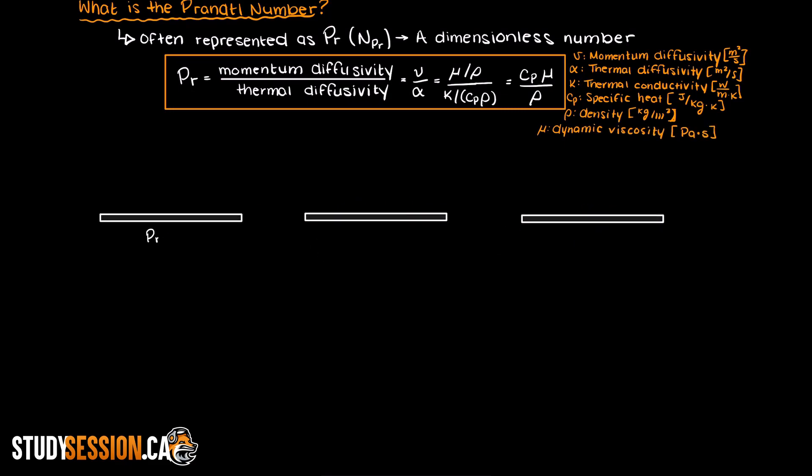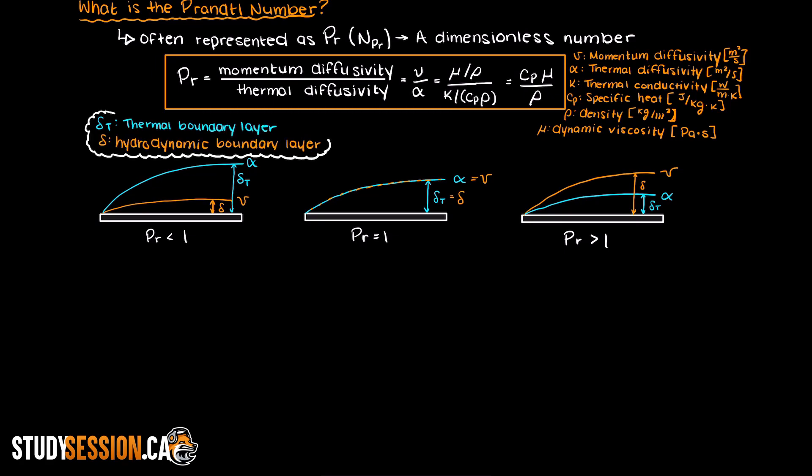Visually, if we have an incoming stream hitting a flat plate, this is what we get for various Prandtl numbers. If you are unsure of what boundary layers are, I will leave a link in the description below to aid your understanding.